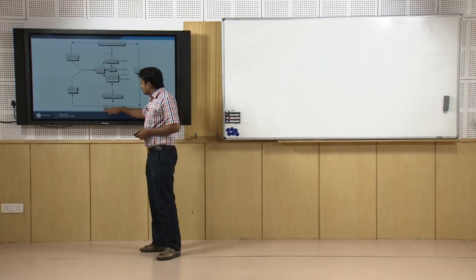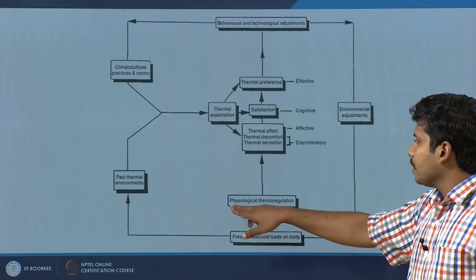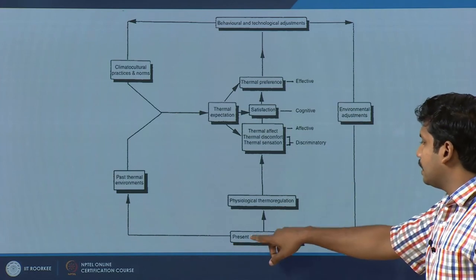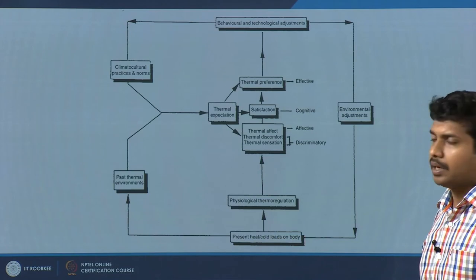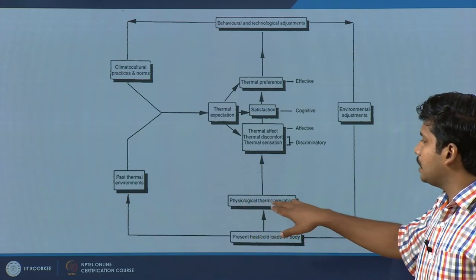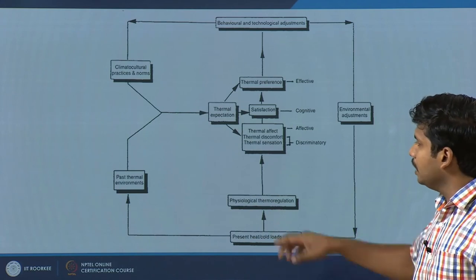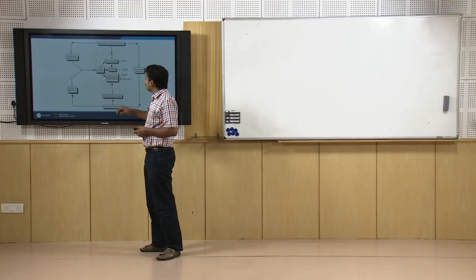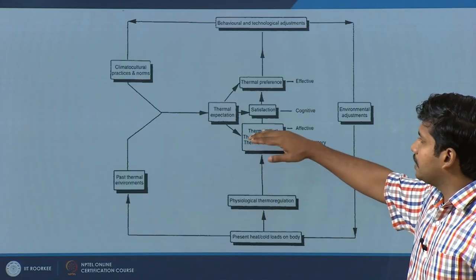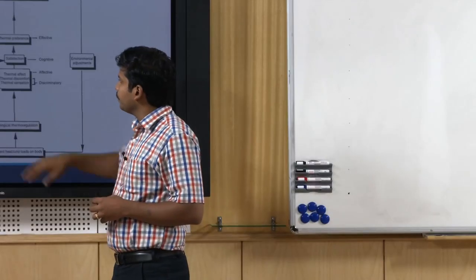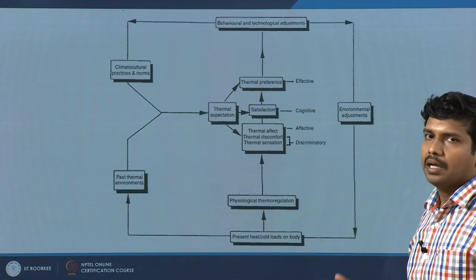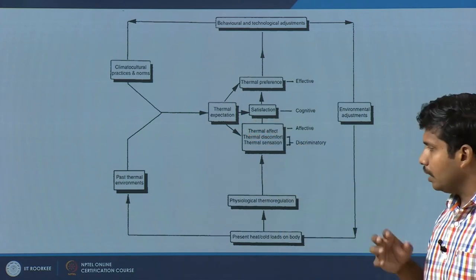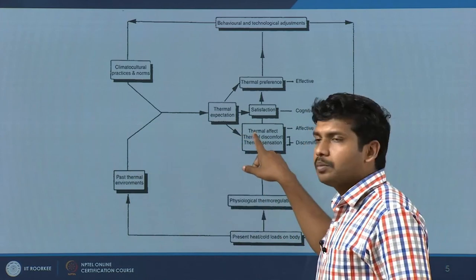A person's body physiologically regulates itself to the thermal environment. Starting from this chart: we present heat or cold loads on a body, and there is a physiological thermoregulation process which the body undergoes. Because of this we start perceiving or experiencing a particular environment. There are three different things: thermal effect — how the environment affects you — then comfort and discomfort, and then sensing the thermal environment.